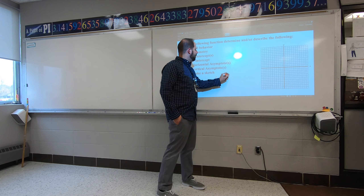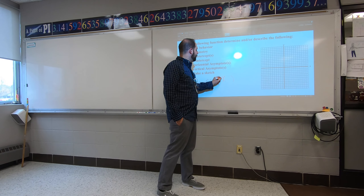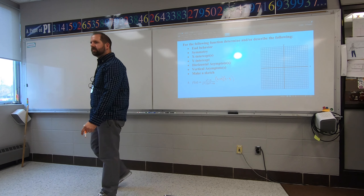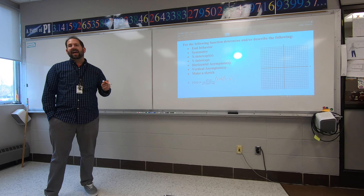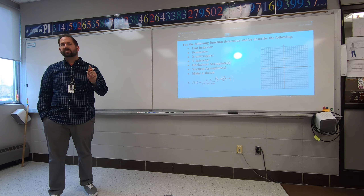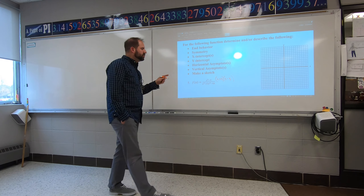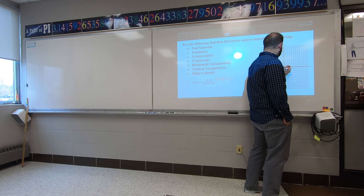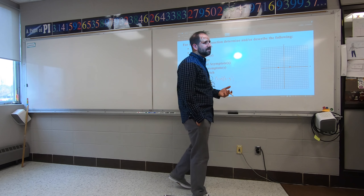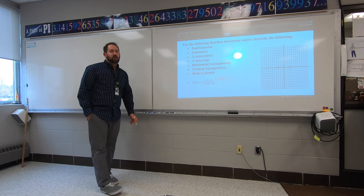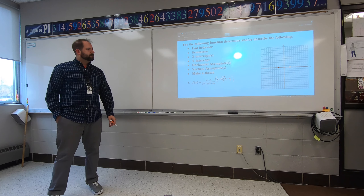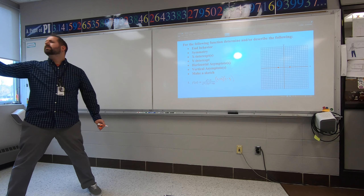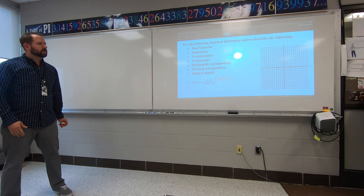If you factor the top — it's a difference of squares on number five — that gives you (x + 3)(x − 3). Those are your x-intercepts: positive three and negative three. So far this is looking like it could be symmetrical, and it is.